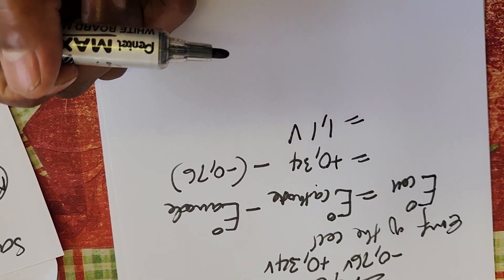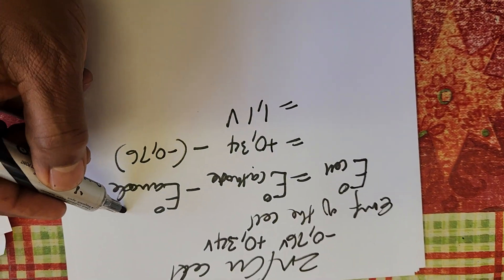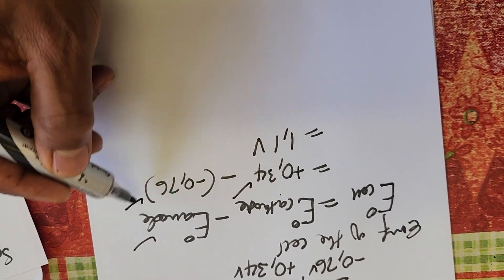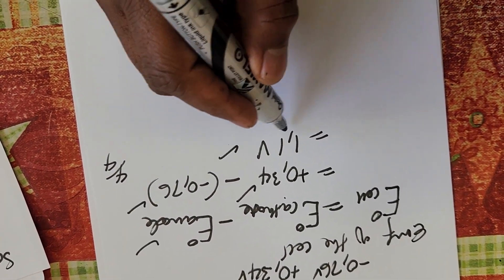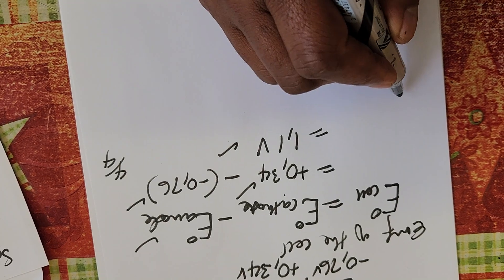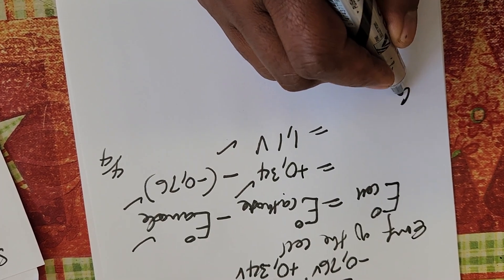That's how you get the four marks: one mark for the formula, one mark for this, one mark for this. So you get four marks, and also from this value we can tell that the cell reaction is spontaneous.